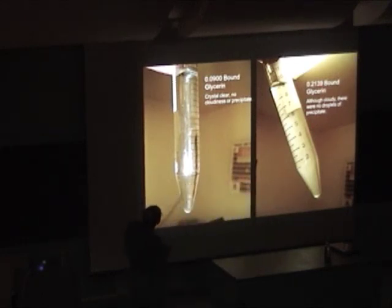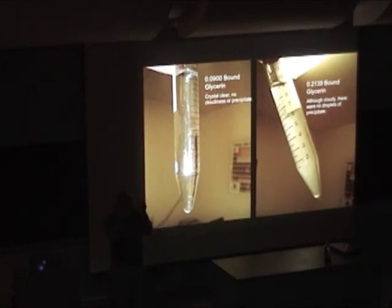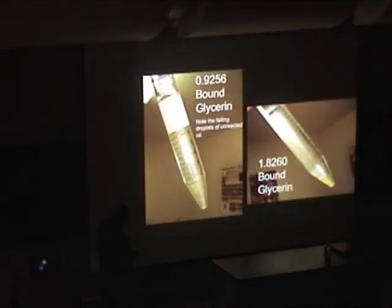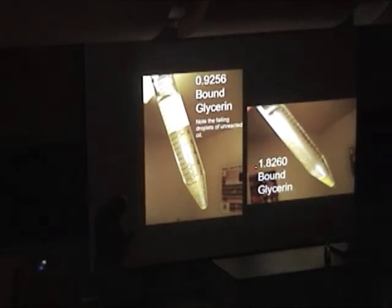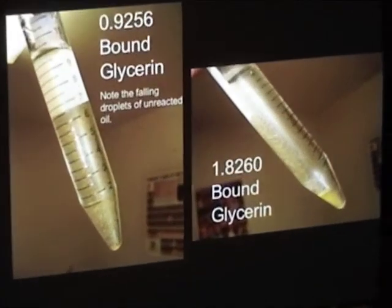The good fuel — the 0.09 WVO sample — was clear, no precipitate. The Illinois State enzyme-made sample clouded but no droplets of precipitate, and on the GC they came in at 0.213, just under spec. The unwashed bad fuel at 0.92 — this is what drops out: these globules of precipitate. When settled, it'll hit 0.82. It's pretty easy to see. These are triglycerides.